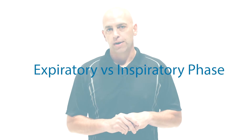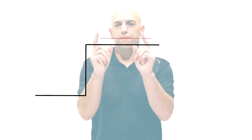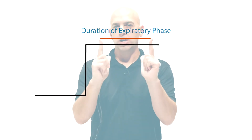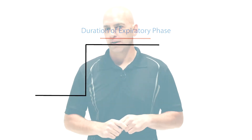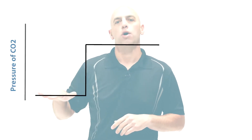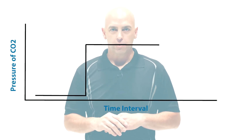Let's make sure you understand the normal shape of the waveform. We can describe it as a box, a plateau with fairly vertical sides. You can overcomplicate it and break it down into phases 1 through 4, or phases 0 through 4 in some books. The more important thing is expiratory versus inspiratory phase. When your patient exhales, we detect CO2, and the width of the waveform — that top of the waveform — is the duration of your patient's expiratory phase. Remember: pressure of CO2 over that time interval — time capnography.